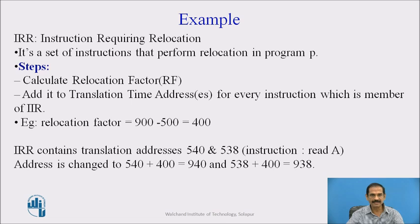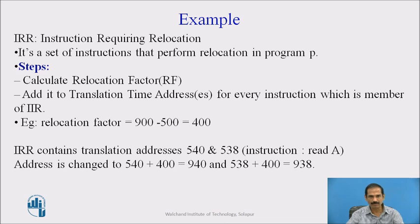As an example, for an instruction requiring relocation (IRR), the steps include calculating the relocation factor RF and adding it to the translation-time address for every instruction in the IRR set. For example, the relocation factor is 900 minus 500 equals 400. IRR contains translated addresses 540 and 538. The address is changed to 540 plus 400 equals 940, and 538 plus 400 equals 938, adding the relocation factor of 400.